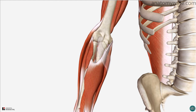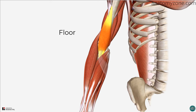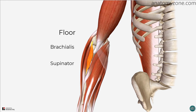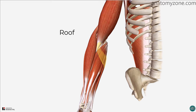The base of the triangle is formed by a horizontal line drawn between the medial and lateral epicondyles. The deep aspect of the cubital fossa, or the floor, is made up by two muscles: the brachialis muscle proximally and the supinator distally. The roof of the cubital fossa is made up from the bicipital aponeurosis as well as superficial fascia and skin.